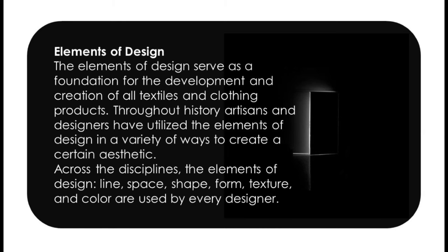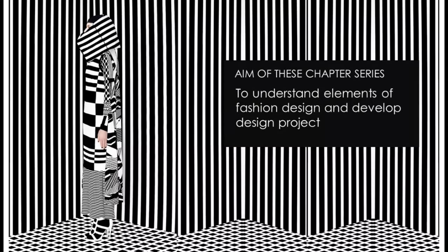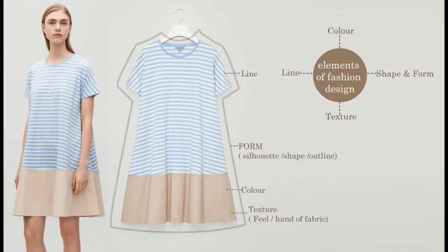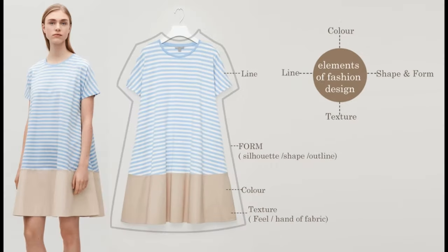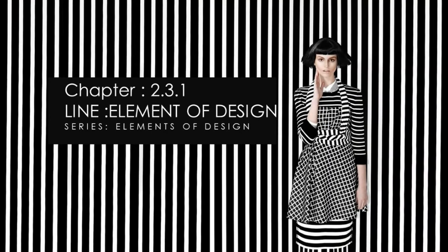Line, space, shape, form, texture, and color are used by every designer. The aim of this chapter is to understand elements of fashion design and develop design projects. Visually, the elements of design include line, form, color, and texture.